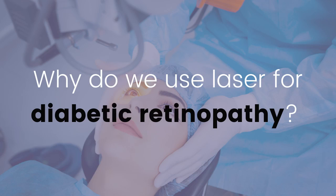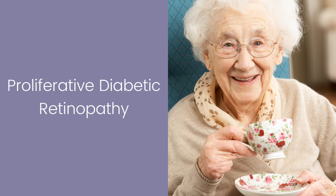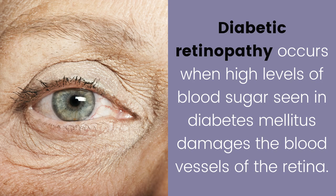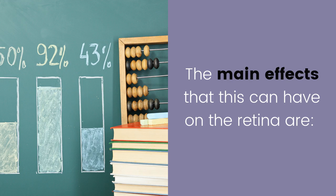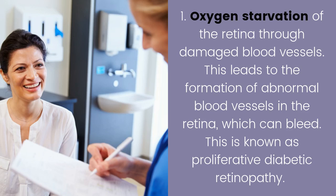How do we use laser for diabetic retinopathy? Proliferative diabetic retinopathy occurs when high levels of blood sugar seen in diabetes mellitus damages the blood vessels of the retina. The main effect is oxygen starvation of the retina through damaged blood vessels, which leads to the formation of abnormal blood vessels in the retina that can bleed — this is known as proliferative diabetic retinopathy.